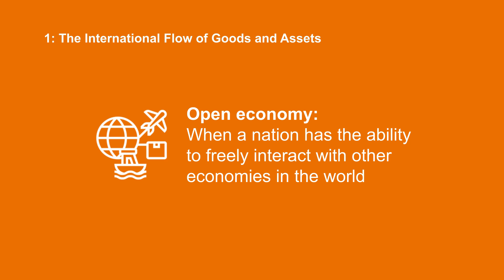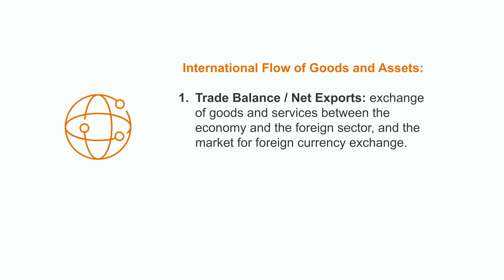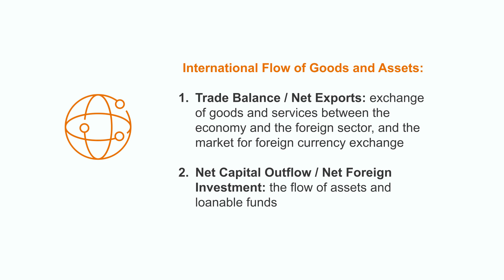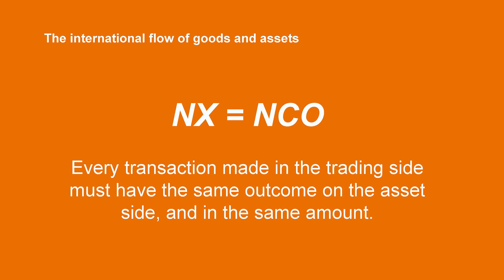When we speak about an open economy, it means that a country has free interaction with the other economies in the world. In order to understand this interaction we must address the international flow of goods and assets. This is represented in two accounts. The first one is the trade balance or the net exports, which reflects the exchange of goods and services between an economy and the foreign sector, as well as the market for foreign currency exchange. Then we have the net capital outflow or the net foreign investment, which is related to the flow of assets and loanable funds. The trading balance and the net capital outflow must be equal — this is an accounting identity. Every transaction made in the trading side must have the same outcome on the asset side and in the same amounts. This is because international trade involves exchanges and fluctuations in foreign currency.